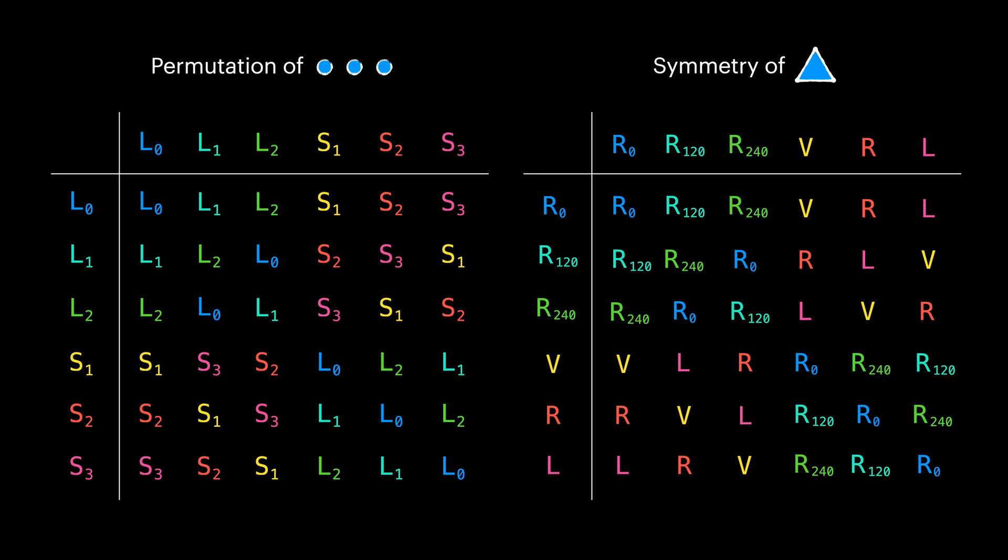These two tables are the same, meaning that permutation of three items and triangle symmetry is the same beast. We can actually consider them equal, or in the context of group theory and functional programming, these two groups are isomorphic.